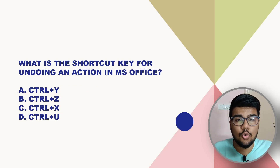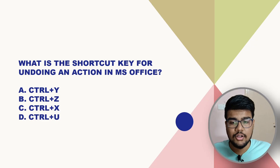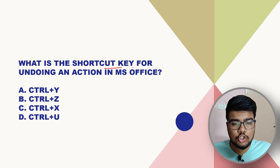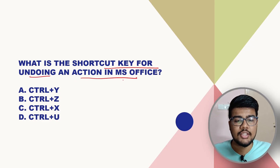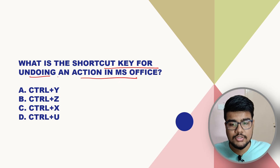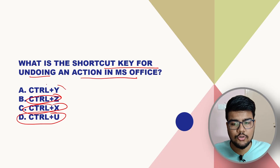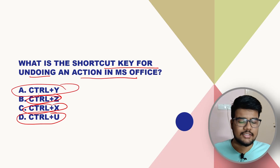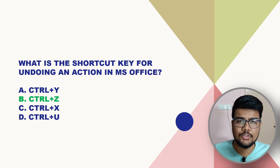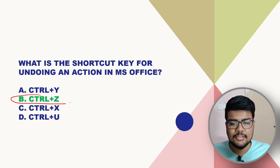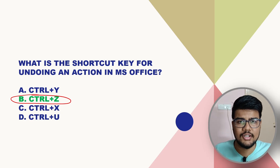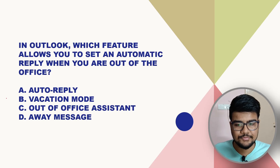What is the shortcut key for undoing an action in MS Office? The options are Ctrl+Z, Ctrl+X, Ctrl+U, and Ctrl+Y. The answer is Ctrl+Z — that is the undo shortcut, and it is the most natural one to remember.